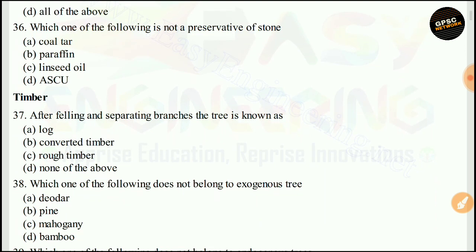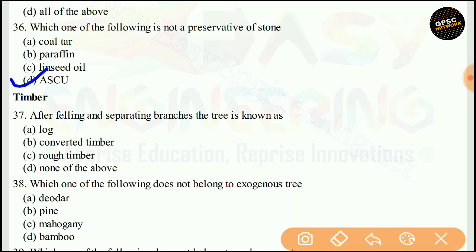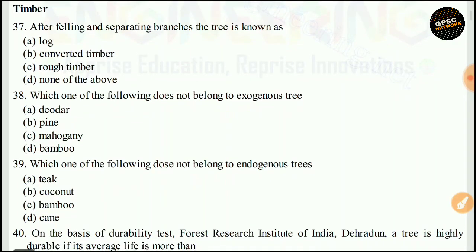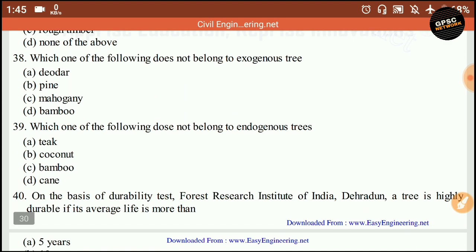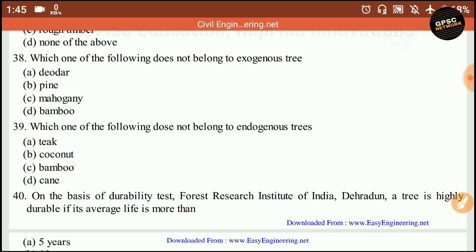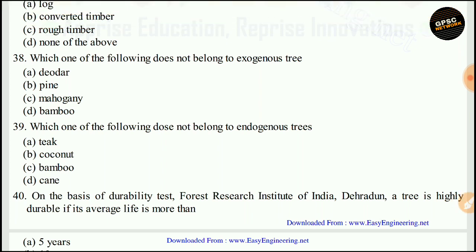Which of the following is not a preservative of stone? The right answer is D. After felling and separating branches from a tree, it is known as rough timber. The right answer is C.